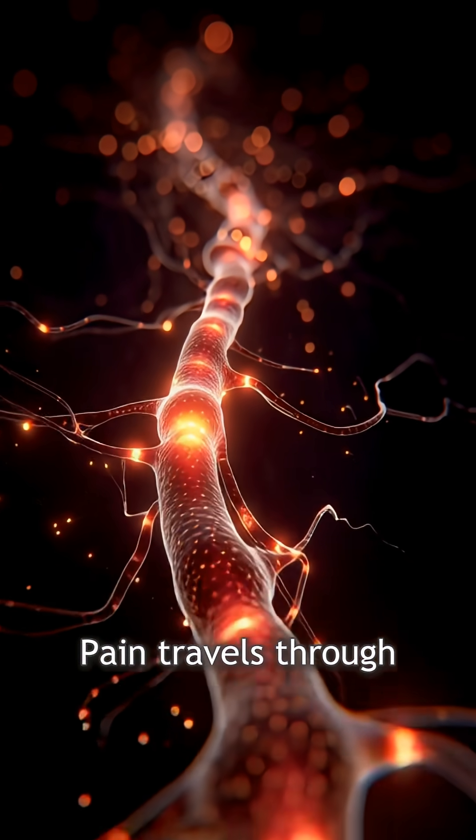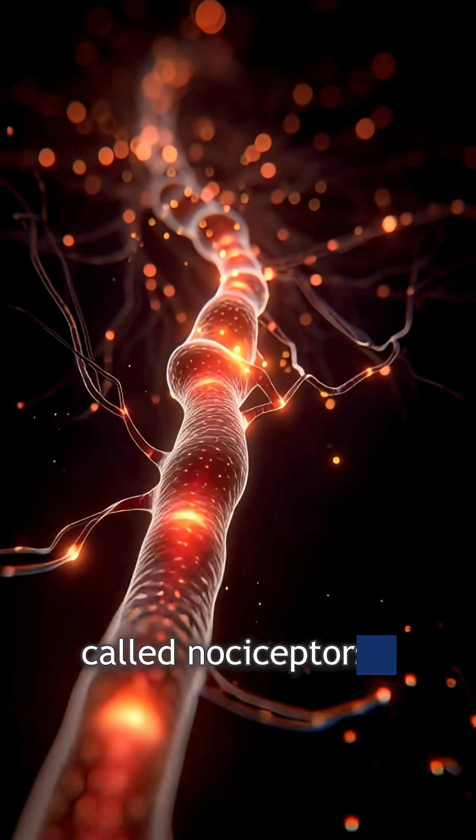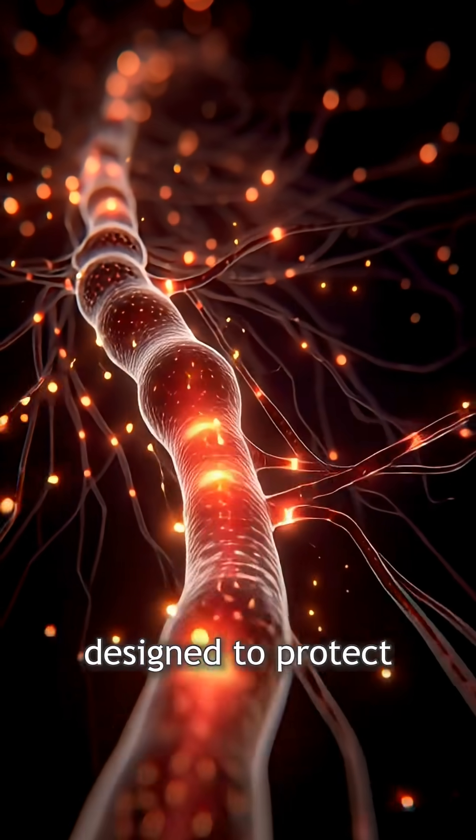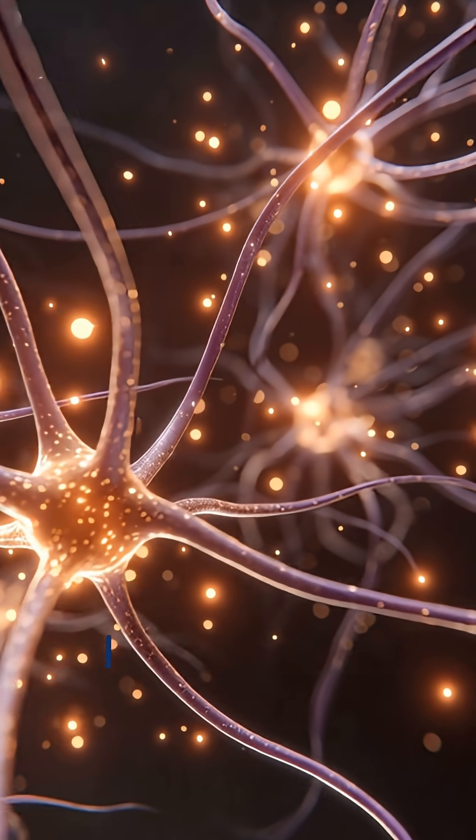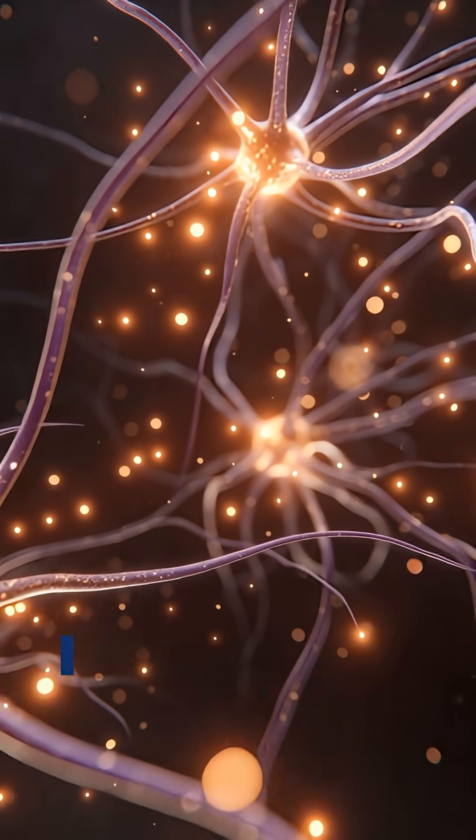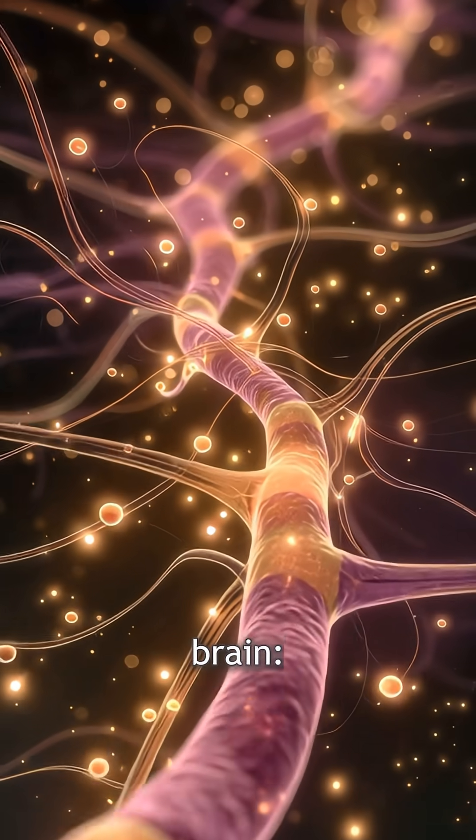Pain travels through specialized nerves called nociceptors, designed to protect you. Pleasure activates reward circuits — dopamine, oxytocin — telling your brain, this is good.